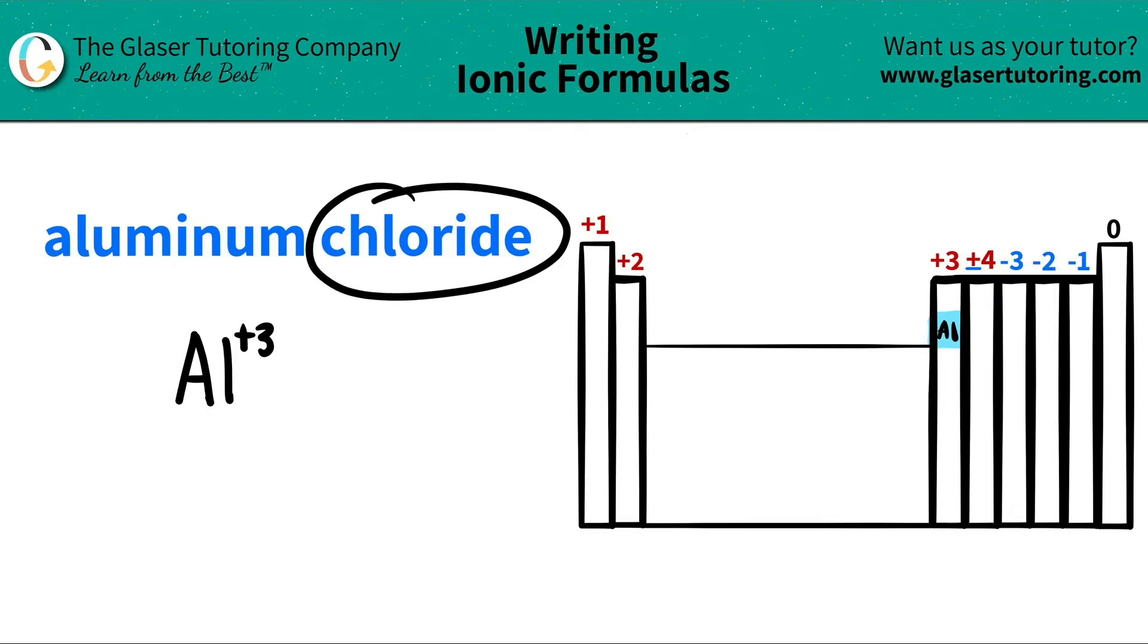And now I go to the next. I got chloride. I see that it's an IDE ending. So chances are it is going to be a non-metal on the periodic table. I look for something that starts with chlor, and I see that I have chlorine. Chlorine is over here.